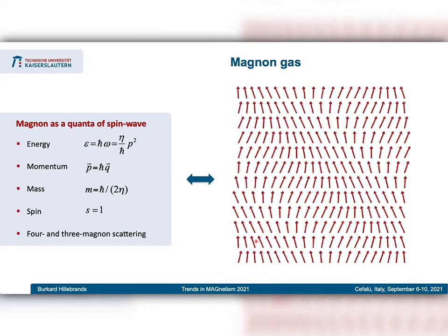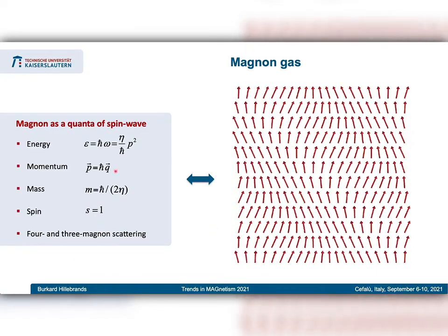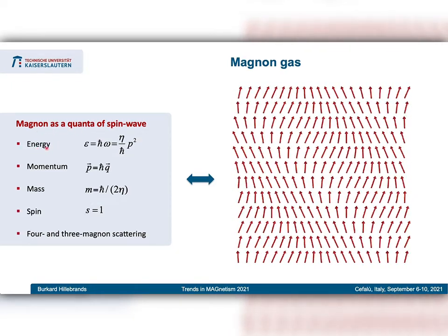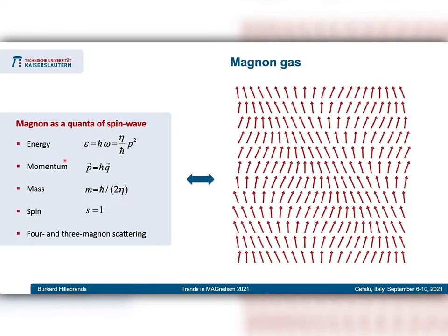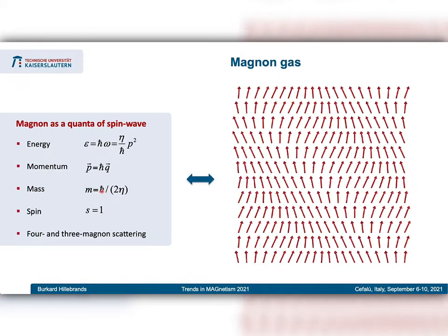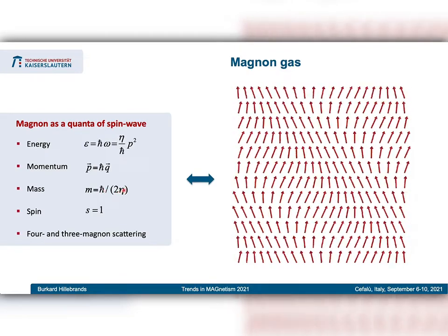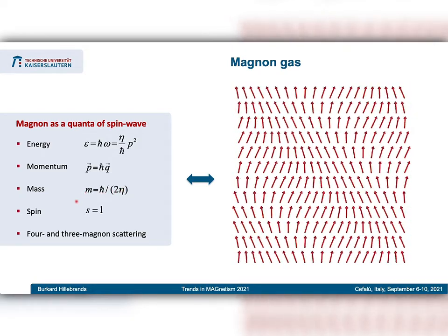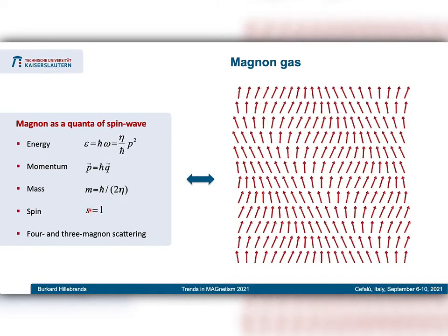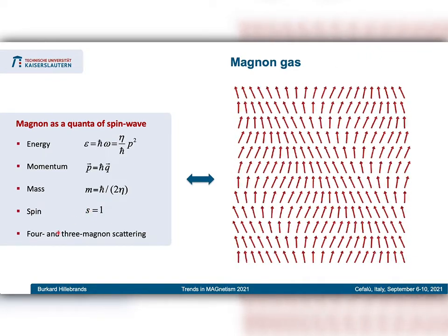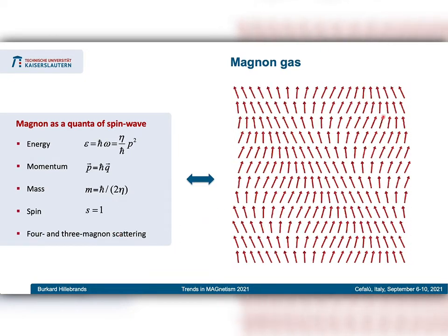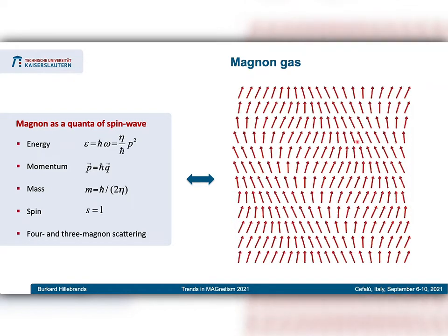Just a small review: you can understand magnons in a quantum mechanical description as the quanta of spin waves. They have energy, they have linear momentum, they can have mass which is provided by the curvature of the dispersion — very analogous to the mass of electrons in a solid-state system — and the magnon has spin s equal to 1. Non-linear interactions are described very conveniently by discussing four- and three-magnon scattering.